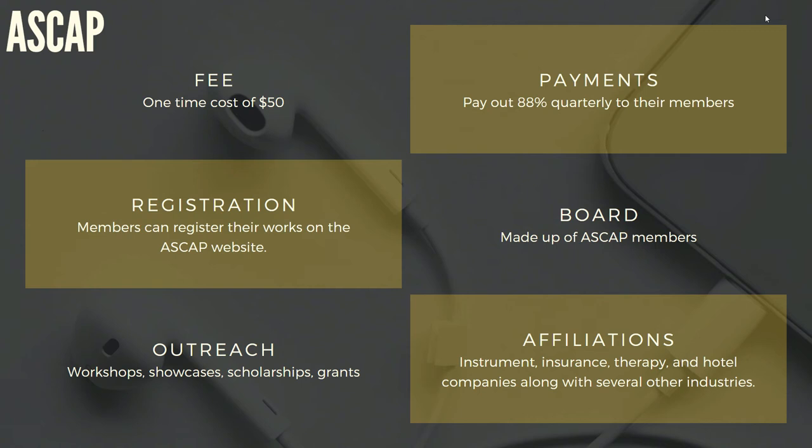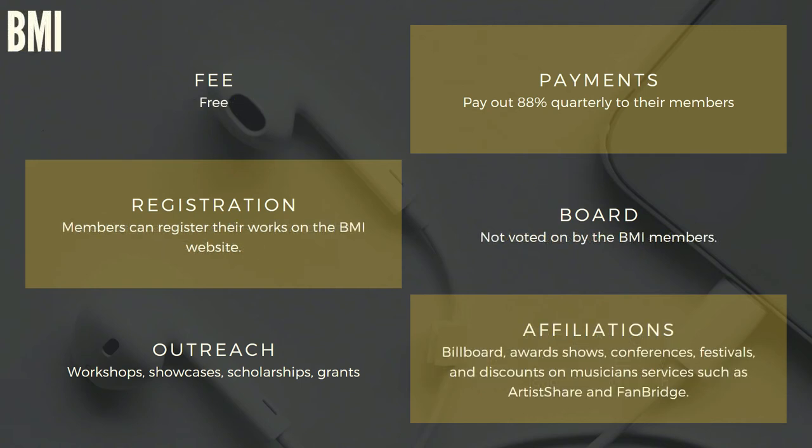Now let's talk about BMI. As mentioned, BMI is much bigger than ASCAP — they are the biggest PRO in the United States. For their fees, they are absolutely free; you do not have to pay a cent, and that is good for the lifetime of your membership. For payments, they will also pay you out quarterly at 88%, keeping 12%, just like ASCAP. The registration process is exactly the same — you register your works on their website.